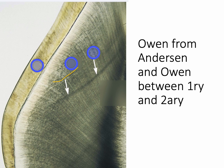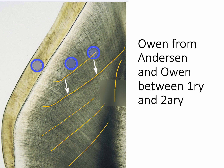Here you can see some Anderson lines running perpendicularly to the dentine showing the almost-weekly intervals of dentine secretion, but one line is really distinctive — that is the contour line of Owen. Also visible is another distinctive line between the primary dentine and the secondary dentine, so we can see two contour lines of Owen in this slide.